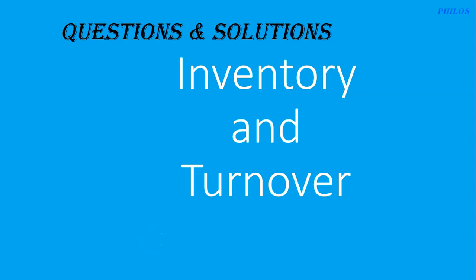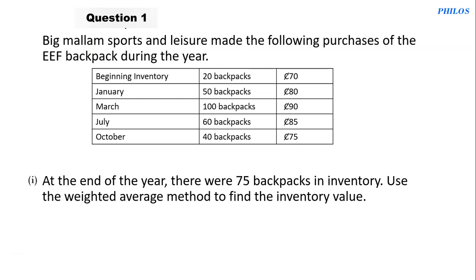Hi, welcome. We're going to look at inventory and turnover, so take your notes, pen, and calculator so that we do this together. The first question says Big Malam Sports and Leisure made the following purchases of the EEF backpack during the year. There's a table, and at the end of the year there were 75 backpacks in inventory.